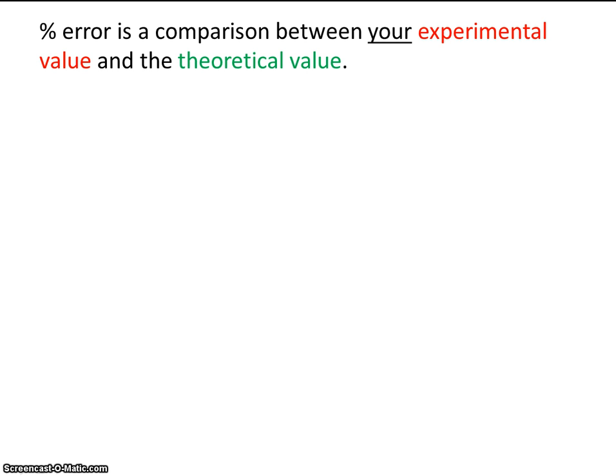Percent error is the comparison between your experimental value and the theoretical value. So the experimental value, that's the value that you get in the lab, that you actually calculate yourself. The theoretical value, that's the value that other scientists believe it to be or the known value, sometimes it's called the accepted value, sometimes it's called the true value.